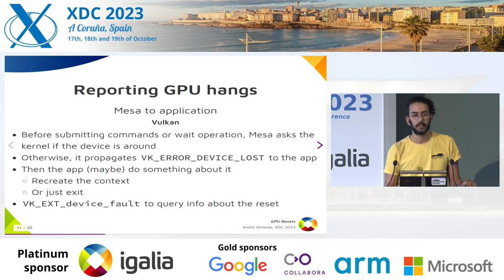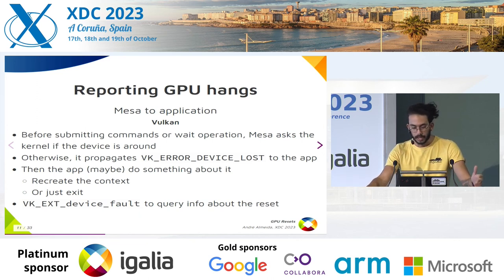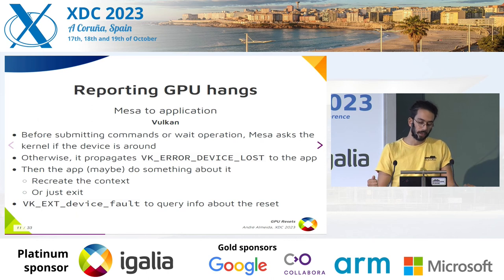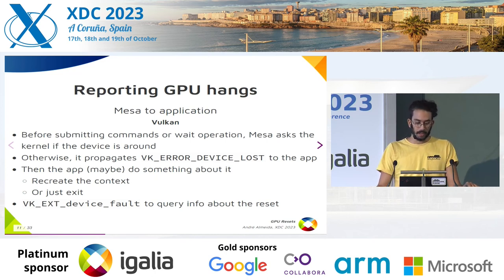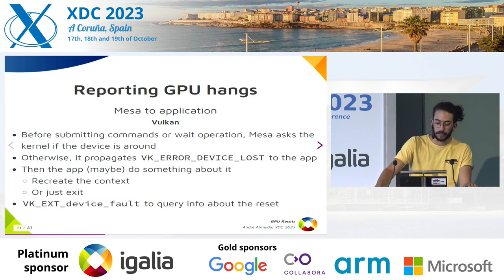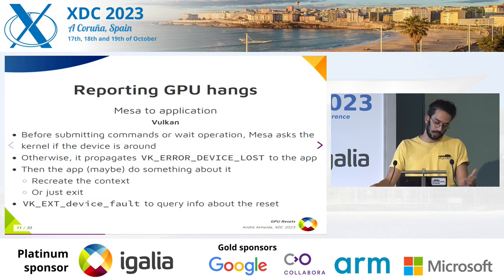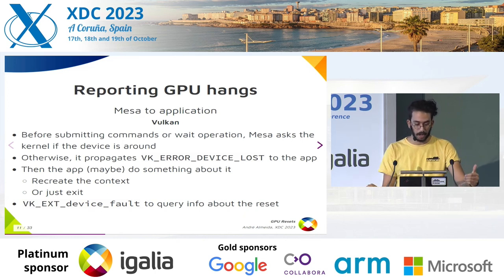Now Mesa needs to tell the application that something went wrong. Some drivers, before submitting commands or issuing wait operations, will ask the kernel if the device is still around. For Vulkan, if they find out the device is not around, they will propagate VK_ERROR_DEVICE_LOST to the app. Then maybe the app can do something about that. If the app wants to be robust, it will recreate the context or just exit. We also have a Vulkan extension to query information about the reset, because VK_ERROR_DEVICE_LOST is an error code for a bunch of things, and you can make a lot of decisions around that.